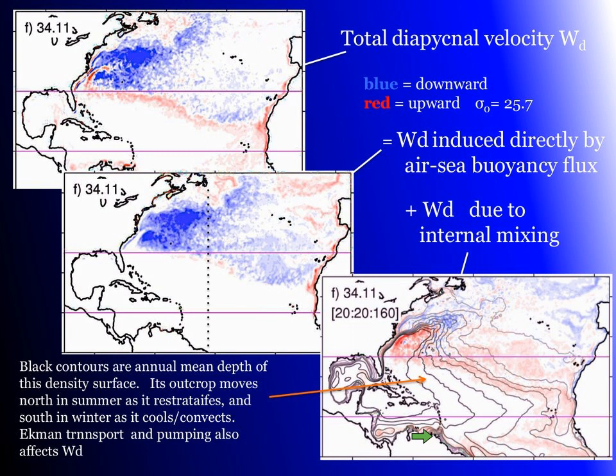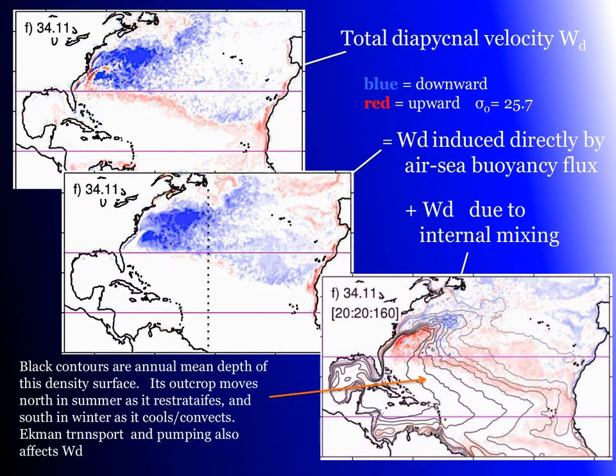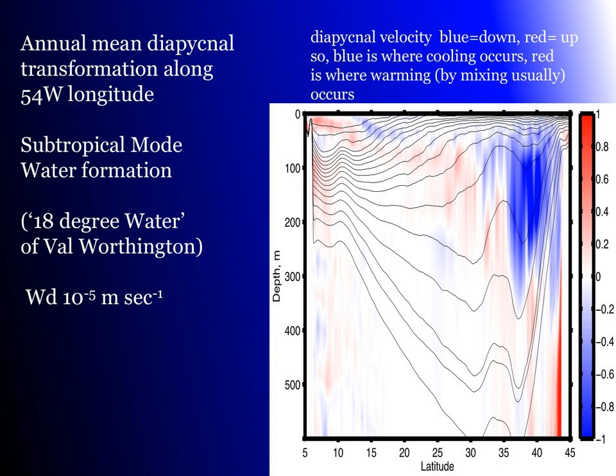So the seasonal variation is the key to all this. If we go to 52 west — that's this dashed line — we'll take a section across it and look at the annual cycle. Here we have the annual mean in cross-section from 5 north to 45 north. The Gulf Stream is at the right, and the blue is the downwelling and cooling in winter. The red is the upward rebound of that circulation, averaged over an entire year. You see this diagonal upwelling warming region reaching down towards the equator.